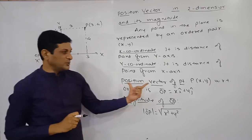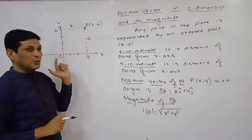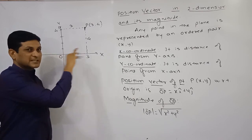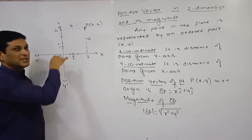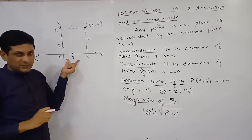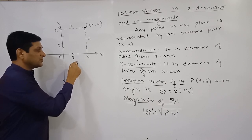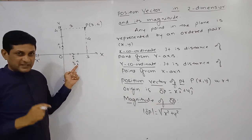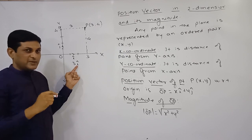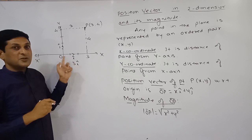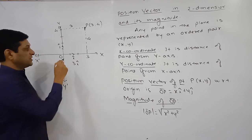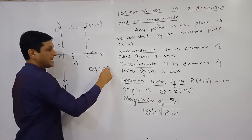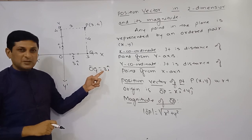Now we discuss how to find the position vector of a point with respect to origin O. We know that i-cap is a unit vector along the x-axis, and j-cap is a unit vector along the y-axis. If we multiply i-cap by 3, we get a new vector 3i-cap along the x-axis with magnitude 3 units. Denoting this point as Q, we can say that OQ equals 3i-cap.